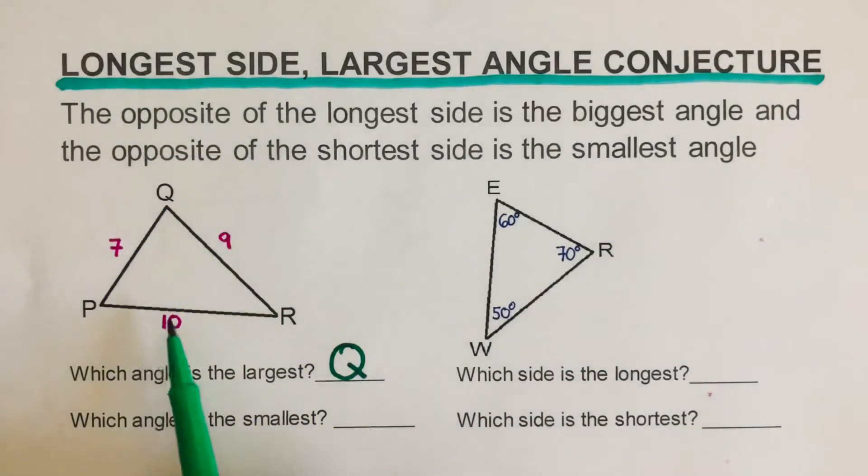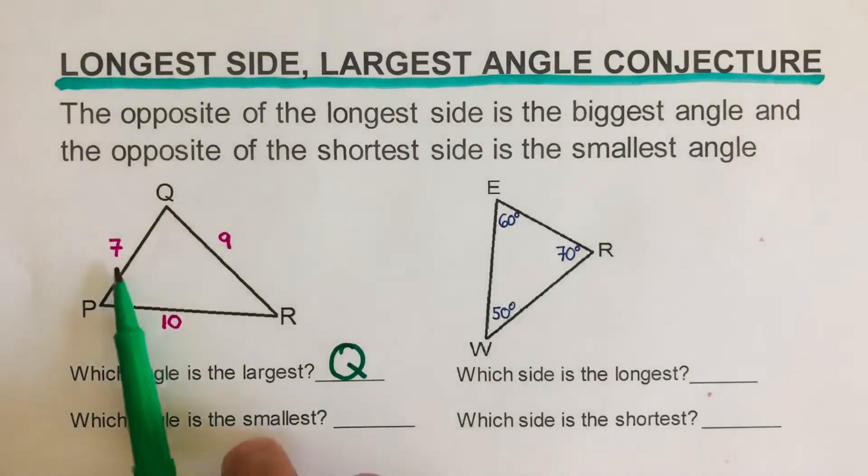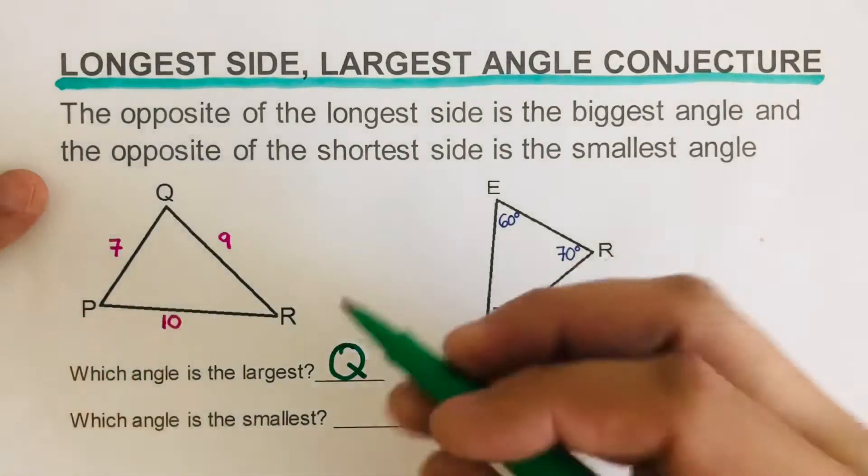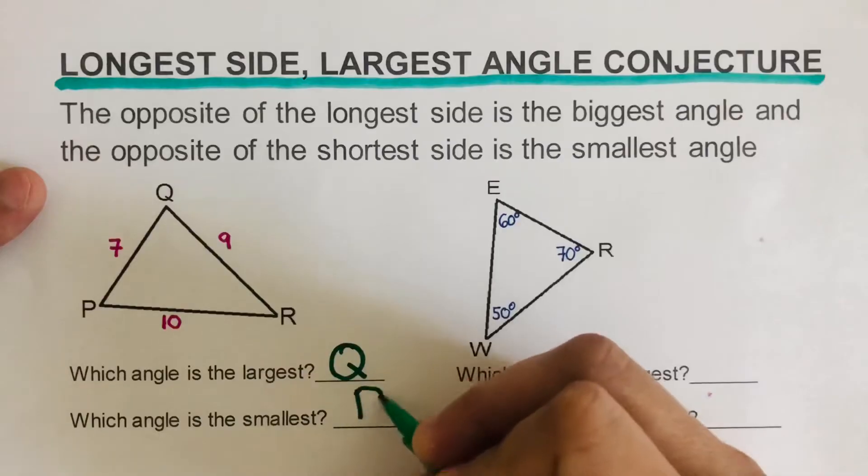Now on the next problem, we're supposed to determine the angle that is the smallest. So the smallest side across from it would be the smallest angle. The angle that is the smallest here is R because 7 is the shortest side. So this is letter R.